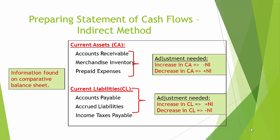We also need to review the change in three current liability accounts: accounts payable, accrued liabilities, and income taxes payable. If there is an increase in a current liability, we would add back the amount of the increase to net income. Conversely, if there is a decrease in a current liability, we would subtract it from net income.